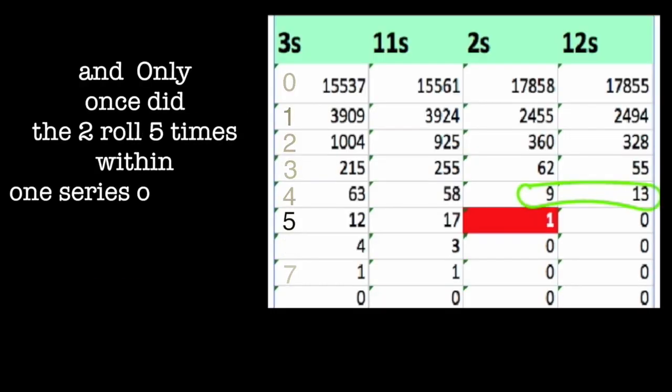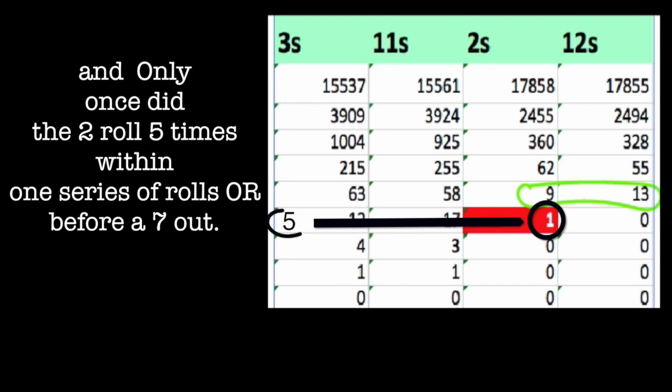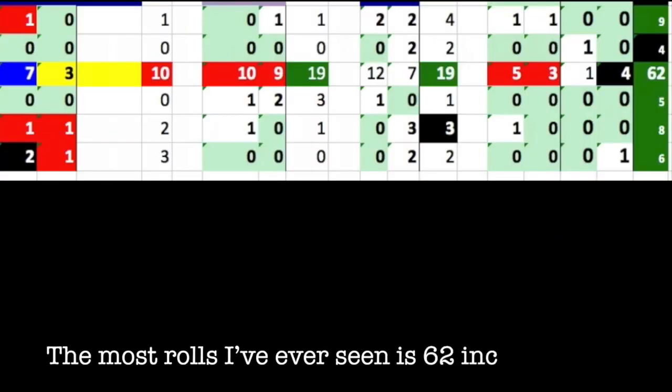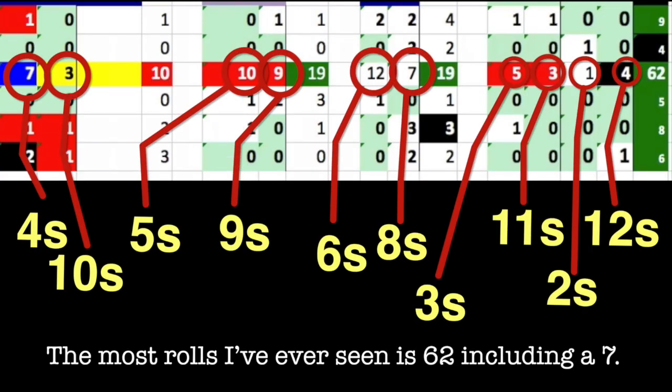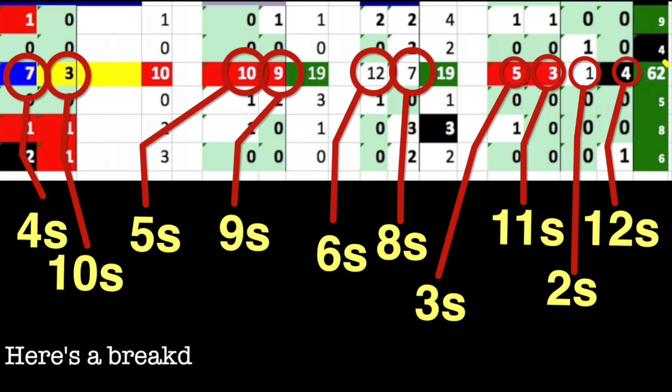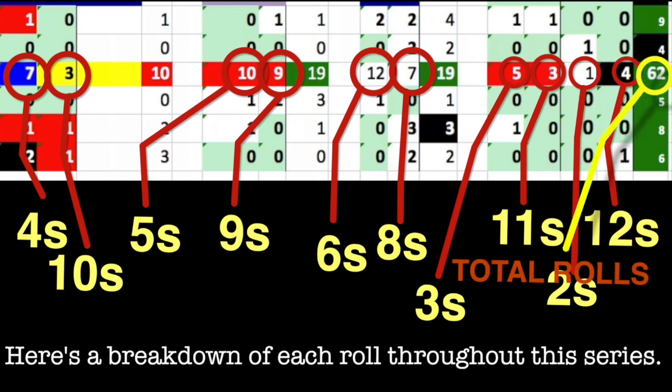And only once did the two roll five times within one series of rolls or up until a seven out. The most rolls I've seen is an astounding 62, including a seven. Here's a breakdown of each roll throughout this series.